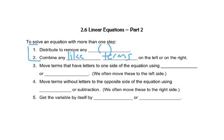Steps one and two are really about making the two sides separately as short as possible. Then we're going to move anything that has letters to one side of the equation using addition and subtraction — usually to the left side, but it doesn't have to be. Then we'll move any terms that don't have letters to the opposite side. The very last step is to get the variable by itself by multiplying or dividing, always using the opposite operation.